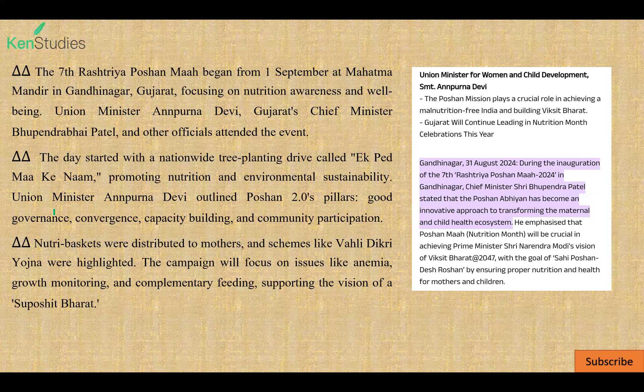Union Minister Annapurna Devi outlined Poshan 2.0 pillars: good governance, convergence, capacity building, and community participation. New tree saplings were distributed to mothers and schemes like Pahali Dikri Yojana were highlighted. The campaign will focus on issues like Anemia, Growth Monitoring, and Complementary Feeding, supporting the vision of a Suposhit Bharat. The 7th Rashtriya Poshan Maah was launched from Gandhinagar, Gujarat.